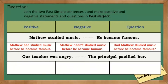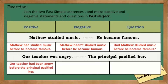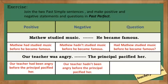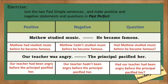Second example: Our teacher was angry and the principal pacified her. The correct positive statement is: Our teacher had been angry before the principal pacified her. Negative sentence: Our teacher hadn't been angry before the principal pacified her. And the question: Had our teacher been angry before the principal pacified her?